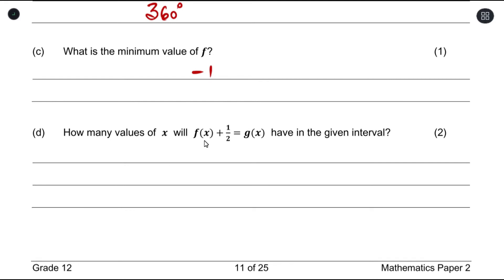Part (d) says how many values of x will f(x) plus half equals to g(x) have in the given interval. Now to answer this question it's best to rewrite it properly. I can move the f(x) over to the other side, so I can write it like this: g(x) minus f(x) equals 1 over 2. Now one thing you need to understand is that we're looking for where g(x) is above f(x).